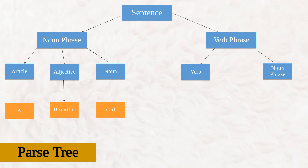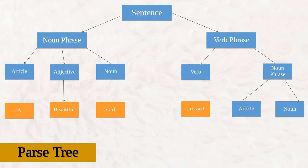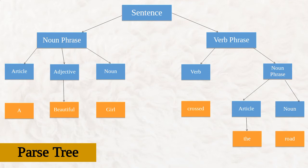The article further breaks into 'a', the adjective breaks into 'beautiful', and the noun breaks into 'girl'. The verb breaks into 'crossed', and the noun phrase breaks into an article and a noun — where the article is 'the' and the noun is 'road'. So joining all the terminals: 'a beautiful girl crossed the road.' That is our parse tree.